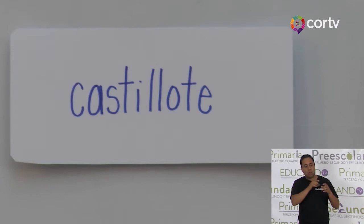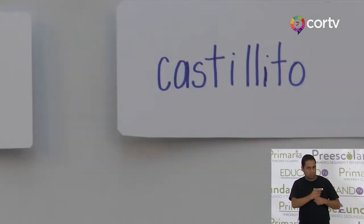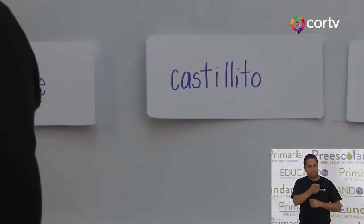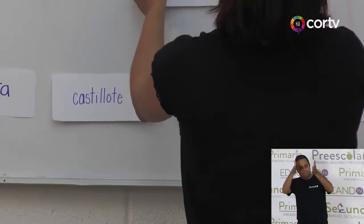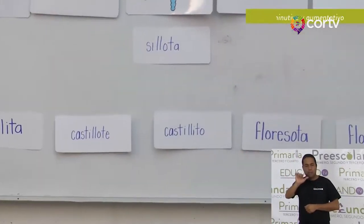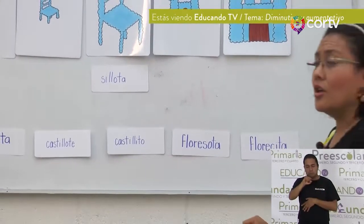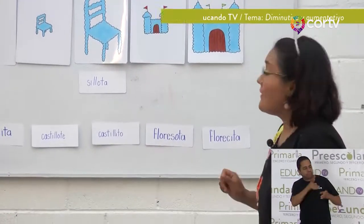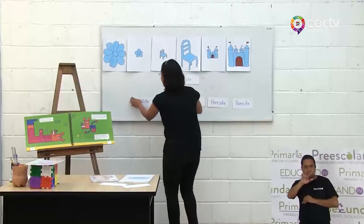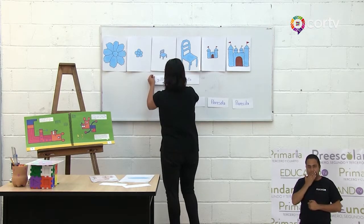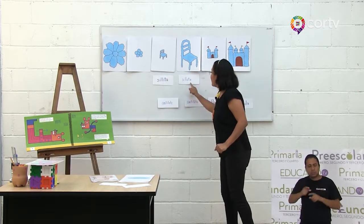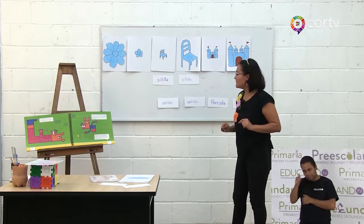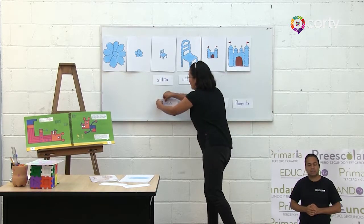¿A qué dibujo corresponde la primera palabra? Recuerda, la primera palabra dice sillota. Muy bien. Corresponde al cuarto dibujo, vamos a moverlo justo aquí. Sillota. La siguiente palabra es sillita. ¿Dónde vamos a acomodar la palabra sillita? Muy bien, justo debajo de la silla pequeña. Observa también las terminaciones de cada una de estas palabras. Tenemos la palabra castillote.